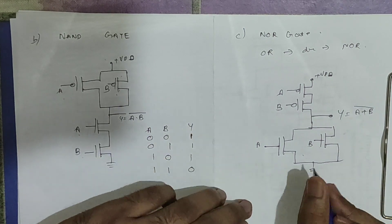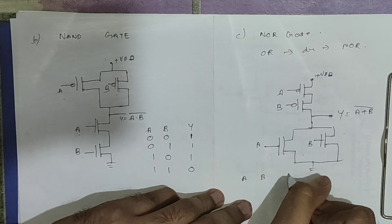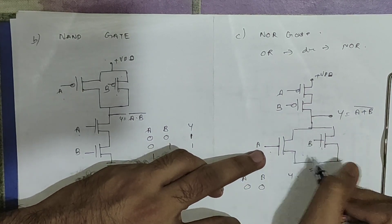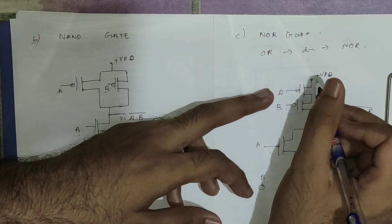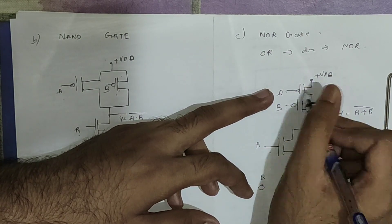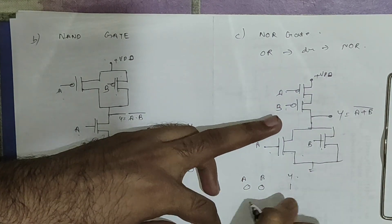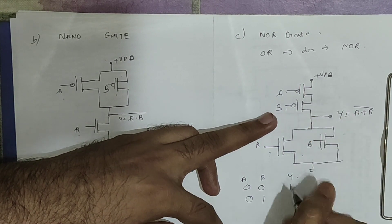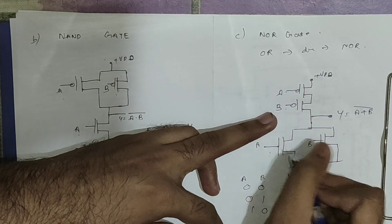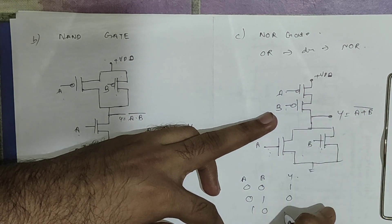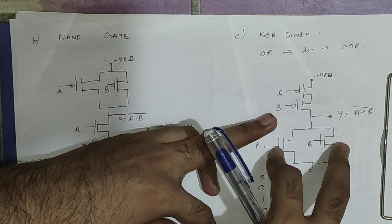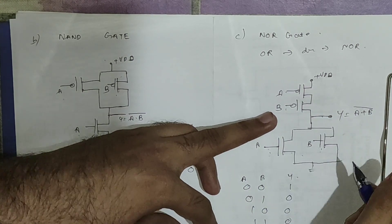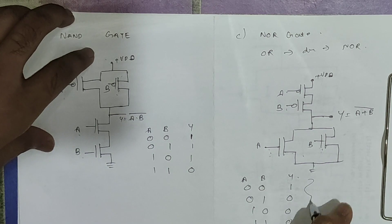Verifying the NOR gate truth table: for A=0, B=0, both NMOS are disconnected and both PMOS are short circuited, giving output 1. For A=0,B=1 or A=1,B=0, one NMOS is connected so output is connected to ground giving 0. For A=1,B=1, both are connected so output is 0. This is the truth table of the NOR gate.